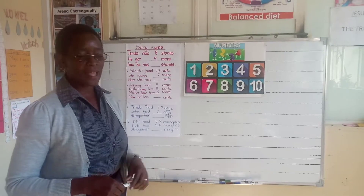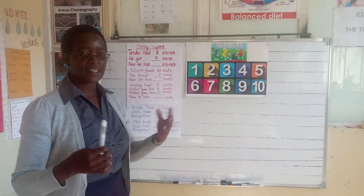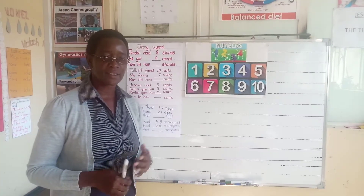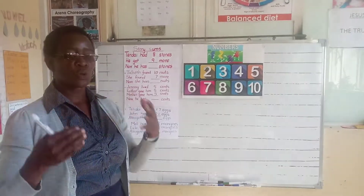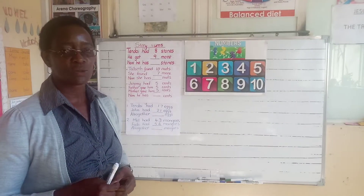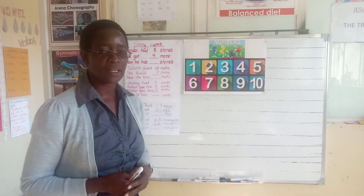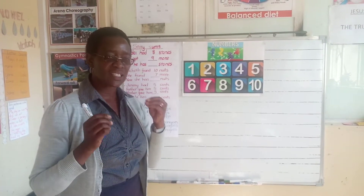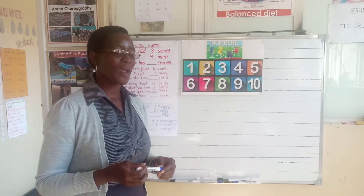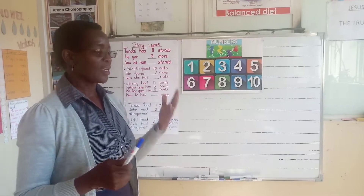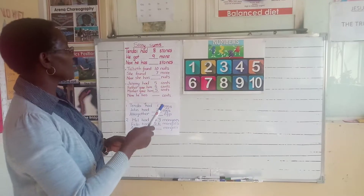So these are called story sums. It's easy to understand in real life — you have to be talking about things which are really happening for you to see how addition, which we know, works. So there is a story.